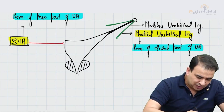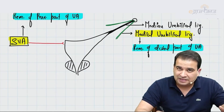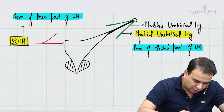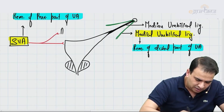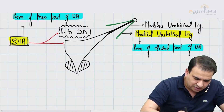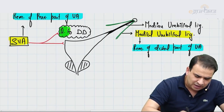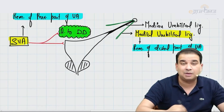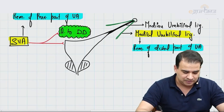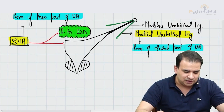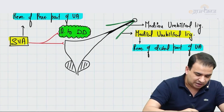Additionally, the superior vesicular artery not only supplies the bladder but in most cases also gives off the artery to the ductus deferens. So the artery to ductus deferens is usually derived from the superior vesicular artery.